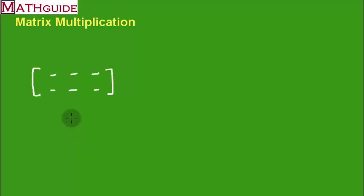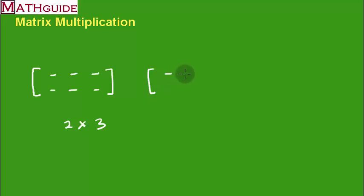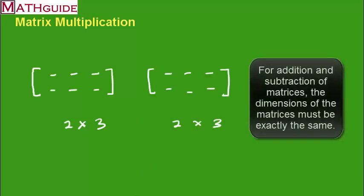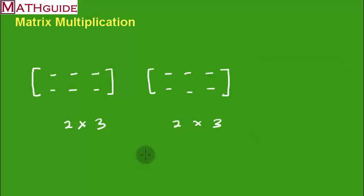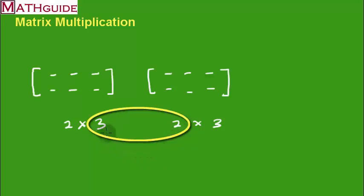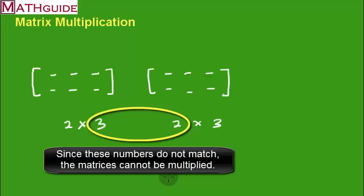This particular matrix is a 2×3 matrix — two rows and three columns. Now let's say we multiply it by another 2×3 matrix. For addition and subtraction this would be fine, since they're exactly the same dimensions. But for matrix multiplication it doesn't work. You can check easily by looking at these two inside numbers: 3 and 2. They have to match — the number of columns of the first matrix must equal the number of rows of the second matrix.